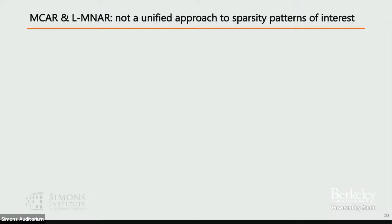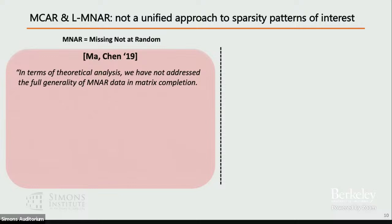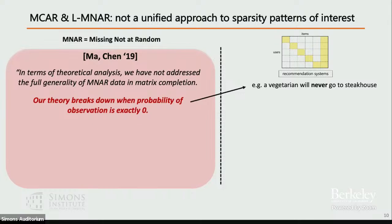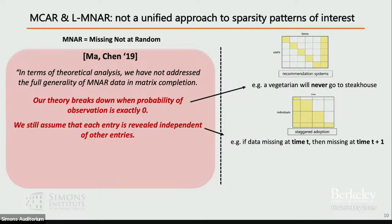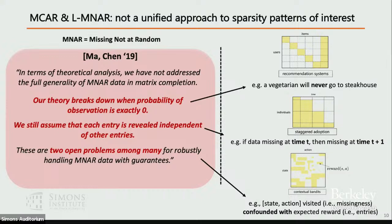The problem is that MCAR and LMNAR work done so far does not provide a unified approach to the variety of sparsity patterns we see. I'll borrow a quote from Ma and Chen at Carnegie Mellon from a NeurIPS 2019 paper. They said: 'We have not addressed the full generality of MNAR data in matrix completion. Our theory breaks down when the probability of observation is exactly zero' — for example, a vegetarian may never go to a steakhouse. They also assumed each entry is revealed independently, which breaks down in staggered adoption settings. These are open problems for robustly handling MNAR data.